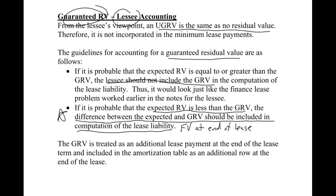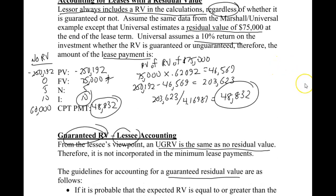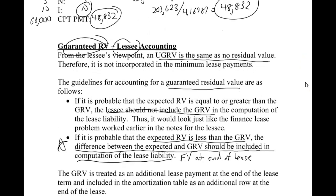The next video will be a lessee example where we have a guaranteed residual value, and we'll see how that affects our amortization table and journal entries. Our payment is now $48,832 — that's what the lessor has told us the payment will be. The main point here is how we calculate the payment and why it's different: the lessor always includes the residual value whether guaranteed or not, while for the lessee we only include it when the expected residual value will be less than what's guaranteed. Tune in next time as we walk through a longer example.